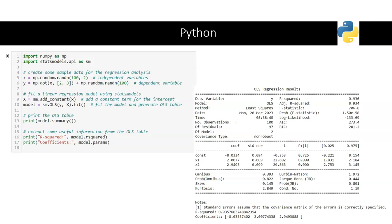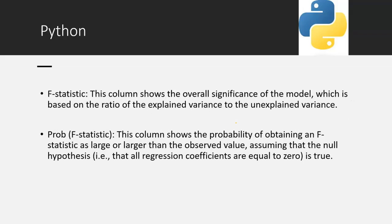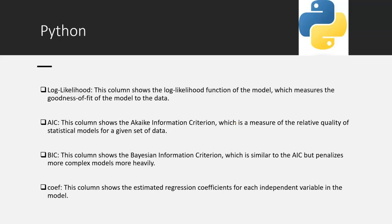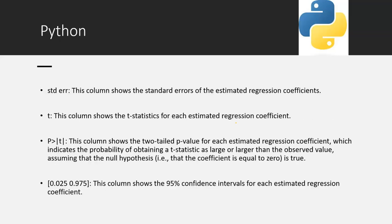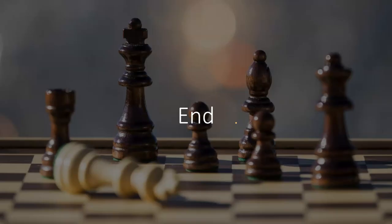In the OLS function, you input the dependent variable Y and independent variable X, apply the fit function, and it tells you whether the model is fitting or not, along with detailed output values. The results include statistics we have discussed, as well as BIC (Bayesian Information Criteria), AIC (Akaike Information Criteria), and log-likelihood — a function that measures the goodness of fit. Each column shows the estimated regression coefficient for each independent variable. This concludes the regression analysis — please leave any questions in the comments.